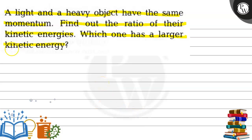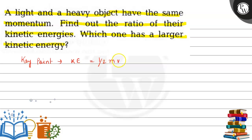So first of all, the main key point of this question is the formula: kinetic energy is equal to half mv squared. The two objects have the same momentum, and the heavier object has more mass.